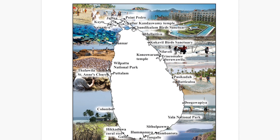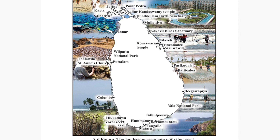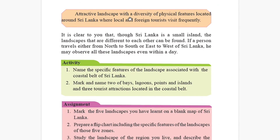Sri Lanka is covered by a beautiful coastal belt. The attractive landscape with diversity of physical features located around Sri Lanka makes it appealing to local and foreign tourists who visit frequently. If we go to Nuwara Eliya there's one climate, Jaffna has a dry zone climate — there's diversity we can see within the country. Our country is not like other countries where the whole country has one season.